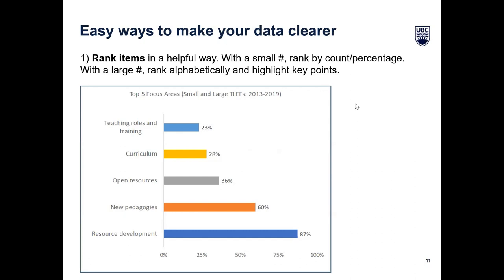We'll go through a few points on how to make your data cleaner for a bar and column chart. The first point: ranking your items in a helpful way. If you have a small number, we would encourage you to rank by the count or the percentage — typically the percentage because it gives a more representative picture. If you have a large number of items, ranking alphabetically and then highlighting key points, using grayscale versus color to highlight the things you need. This version uses a subset of the data to tell a specific story — it's much more streamlined and easier to pull out the information.